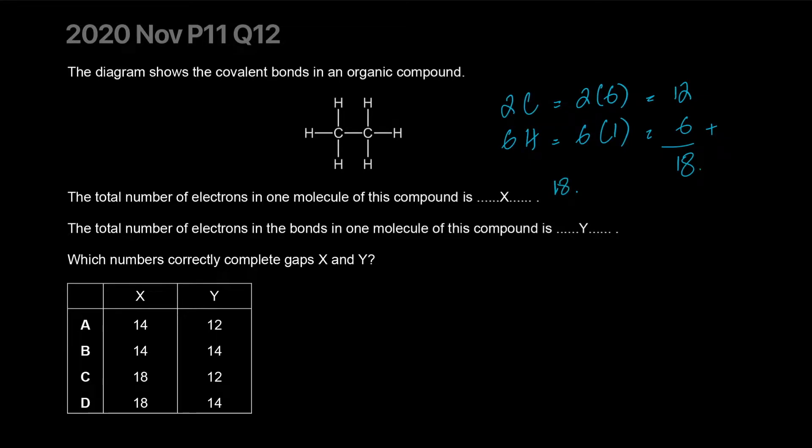And how many are bonded? Each bond is two. So you have one, two, three, four, five, six bonds, right? So you should have 12. So you see 12 here for Y and you see 18 here for X. The correct answer is C.